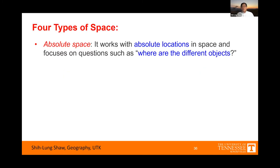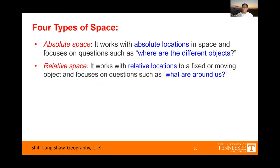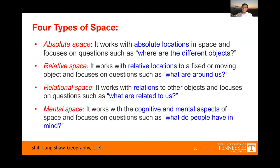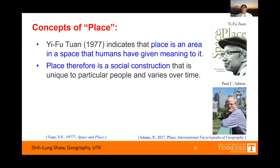To summarize these four different types of space: absolute space works with absolute location in space, and we focus on questions such as 'where are the different objects?' as in conventional GIS. Relative space works with relative locations to either a fixed object or moving objects like a vehicle, and we focus on questions such as 'what is around us?' Relational space works with relations to other objects and we focus on questions such as 'what is related to us?' — like social networks. And mental space works with the cognitive and mental aspects of space, and we focus on questions such as 'what do people have in mind?' That's the concepts of space under this framework; next let's talk about the concepts of place.